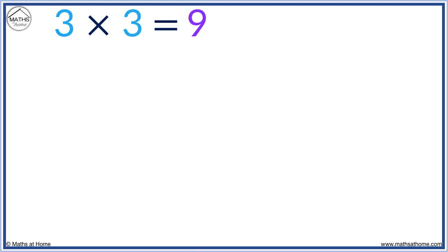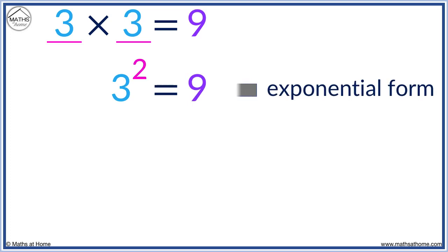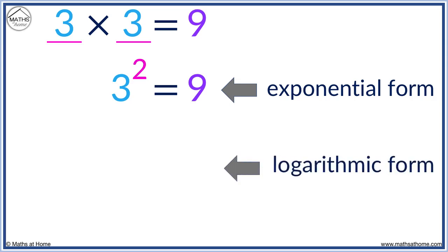3 times 3 equals 9. We can write this in exponential form as 3 squared equals 9. The small 2 tells us how many times the 3 is multiplied to make 9. We will now write this in a different way called the logarithmic form. To show that we are writing it in this way, we write the word 'log'. When written in this way, the order of the numbers changes.